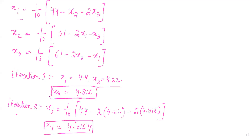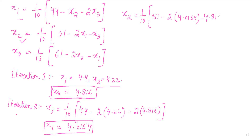With x1 equal to 4.0154 and x3 equal to 4.816, we obtain x2 in iteration 2: x2 equals one-tenth of (51 minus 2 times 4.0154 minus 4.816). Solving this, x2 comes out equal to 3.0148.